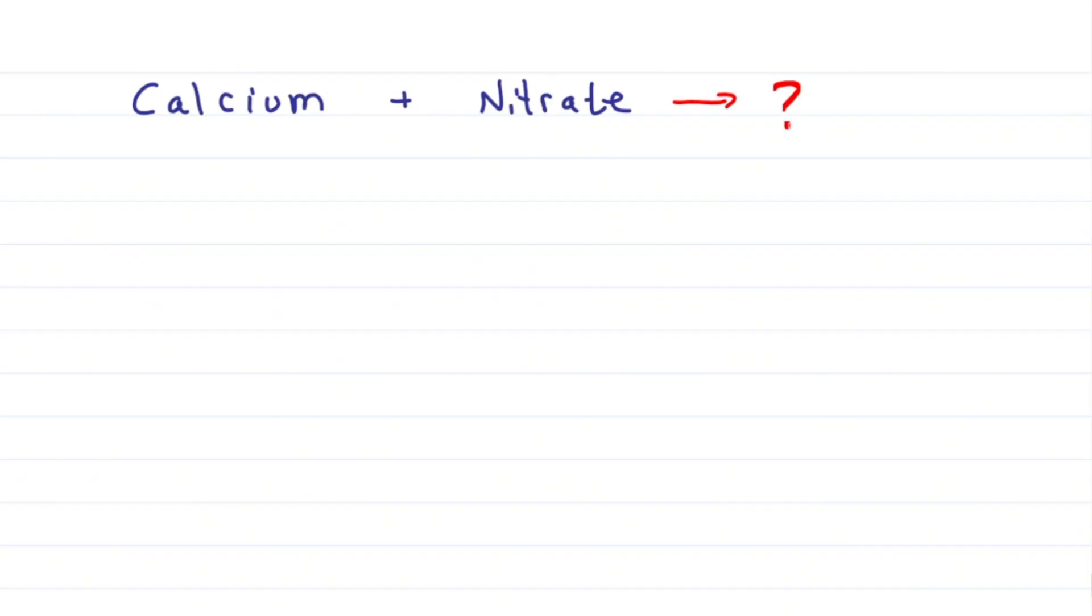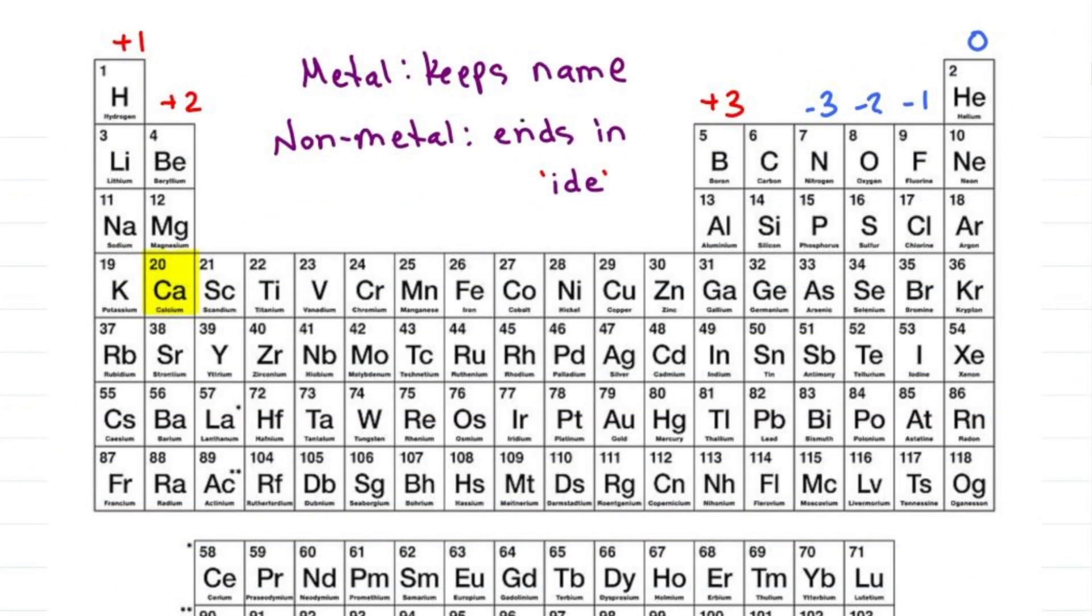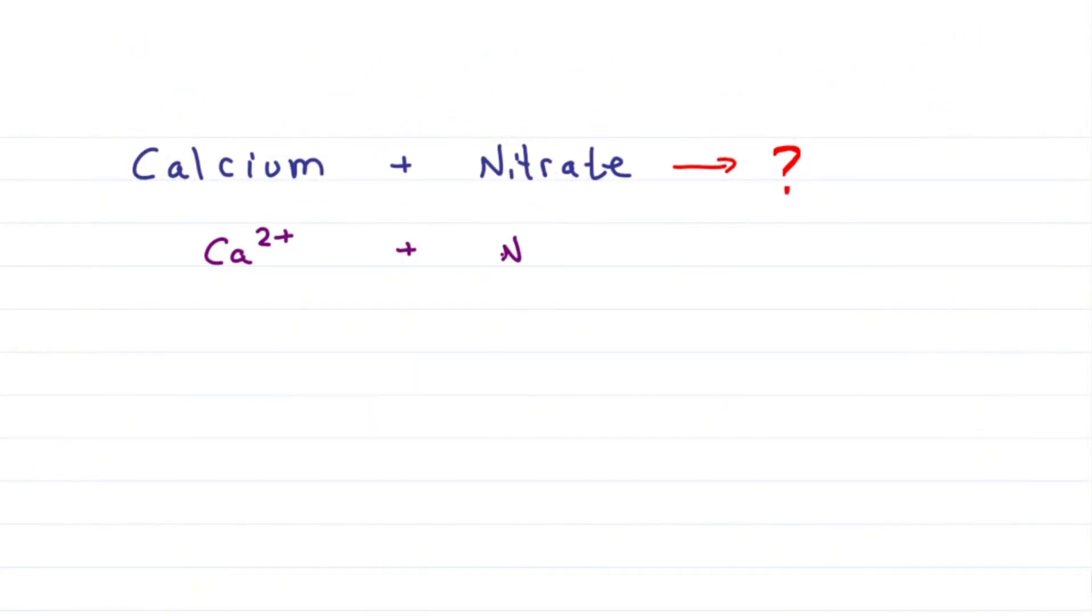What about calcium and nitrate? We see that calcium is plus 2. Nitrate you have to memorize as NO3 minus. Since the charges are not the same, we have to crisscross. Bring the 2 down to the nitrate, the 1 down to the calcium.